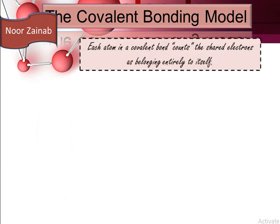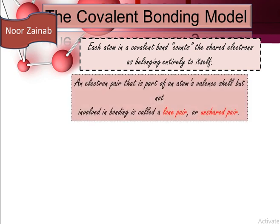In the covalent bonding model, each atom in a covalent bond counts the shared pair of electrons as belonging entirely to itself. An electron pair that is part of an atom's valence shell but not involved in bonding is called a lone pair or unshared pair. Lone pairs are not involved in bonding. A lone pair includes two electrons.